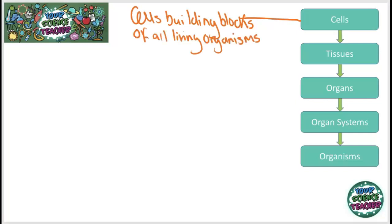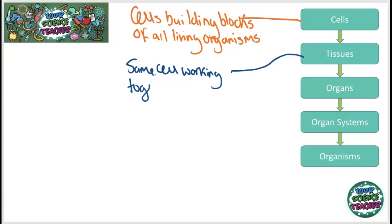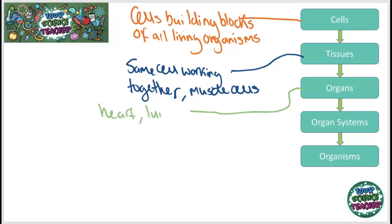In our body we are made up of billions of cells. When we have the same cells working together we call this a tissue — an example of a tissue could be muscle cells. When we have tissues working together we call this an organ. On the next slide we're going to look at some examples of different organs, like the heart and the lungs.